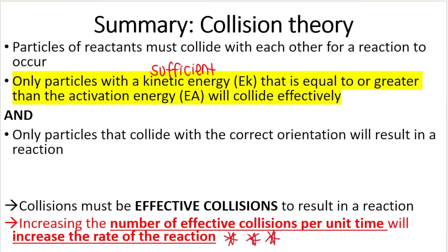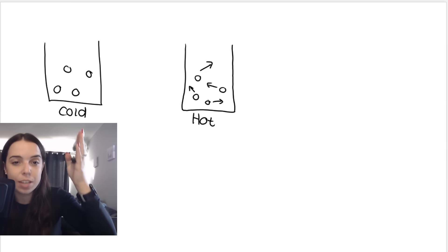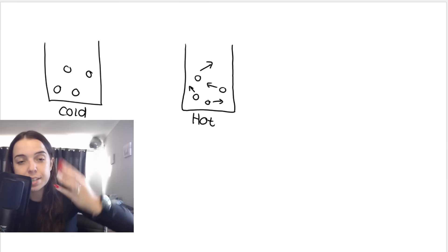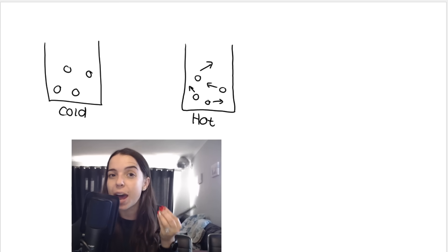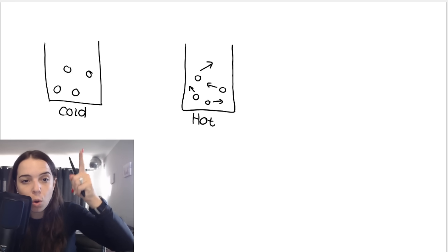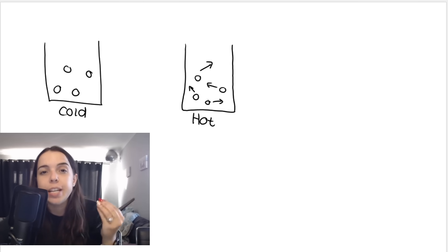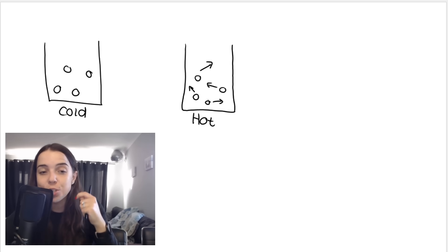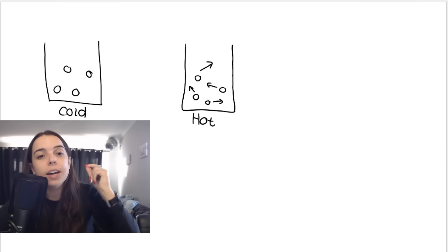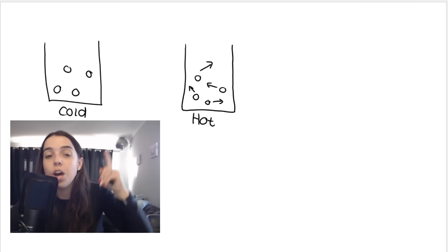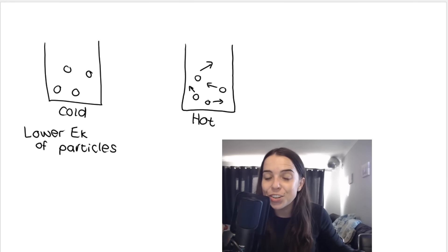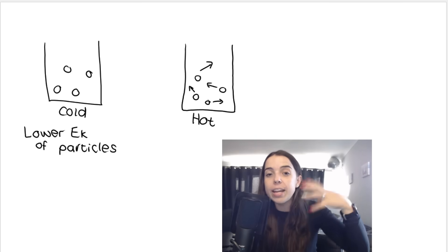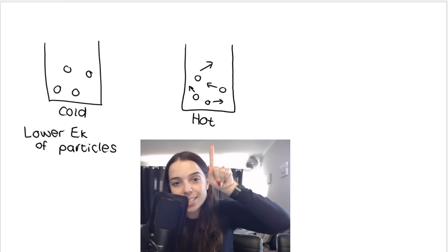Think about this scenario: the same number of particles in a cold beaker versus the same situation in a hot beaker. In the colder beaker, temperature is related to average kinetic energy, so the colder the beaker, the slower the movement and the lower the kinetic energy. If you heat that beaker up, the particles start to move faster — their kinetic energy increases, which increases the frequency of collisions.